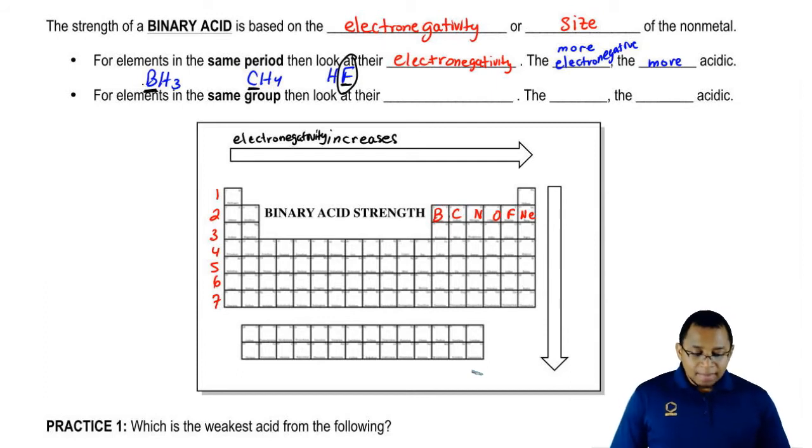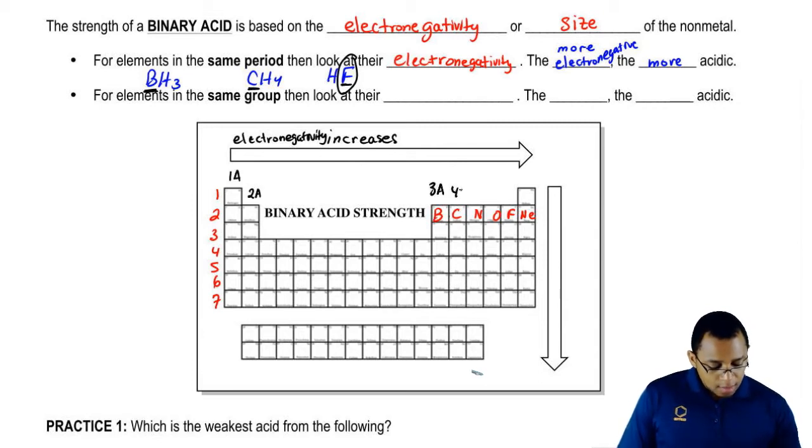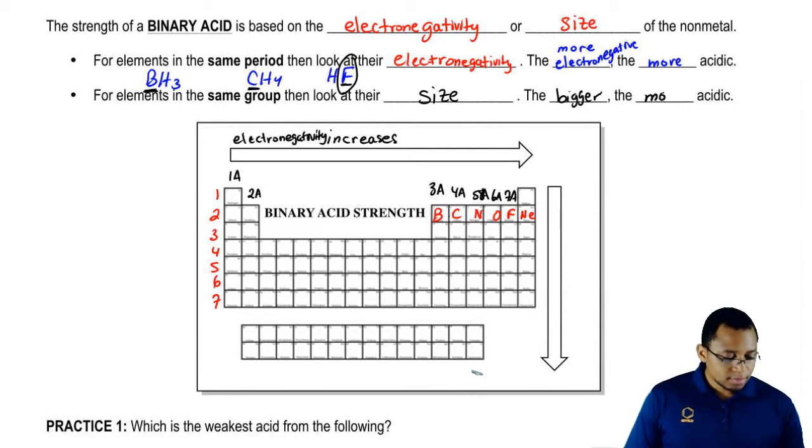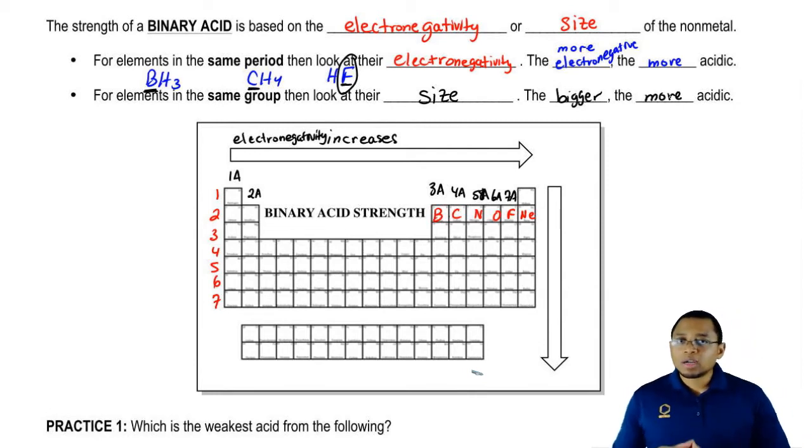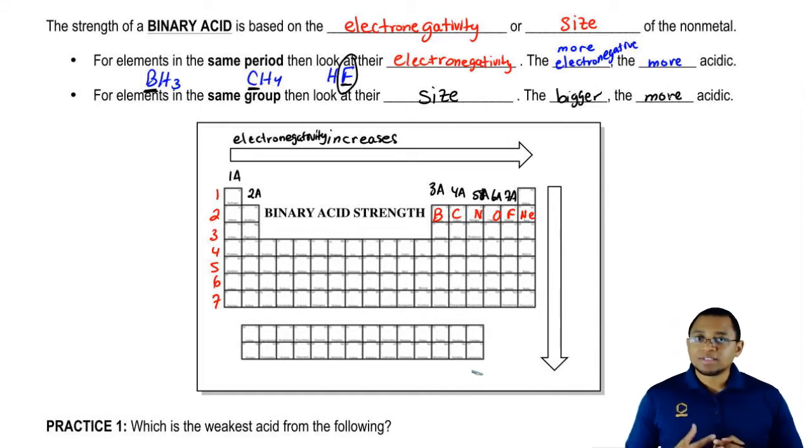However, for elements in the same group, remember groups go vertical. This is 1A, 2A, 3A, 4A, 5A, 6A, 7A. We're going to say here in this case, we look at their size when they're in the same group. And we're going to say the bigger, the more acidic. Now remember, when we're talking about size, we're really talking about atomic radius. And we're going to say your atomic radius increases when you go down a group.